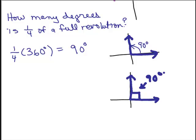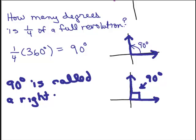In any case, we've got the one-fourth of a revolution would be 90 degrees. And this angle, 90 degrees, is called a right angle.